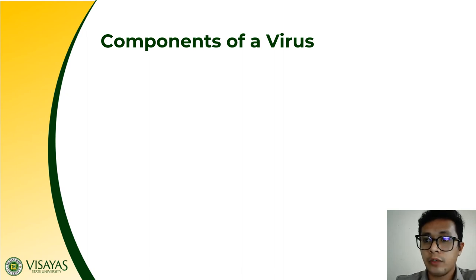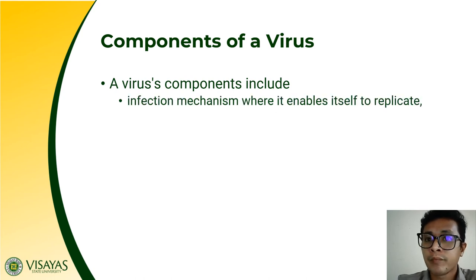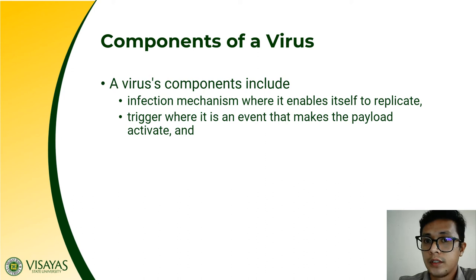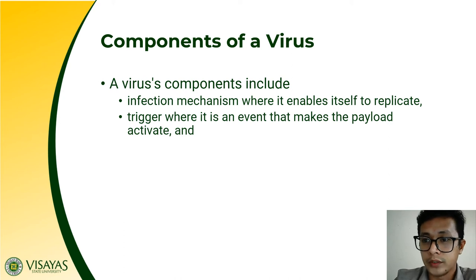What are the components of a computer virus? Normally, these are the different components. It has an infection mechanism, wherein the infection mechanism enables it to replicate — because the only way for a computer virus to infect is to replicate itself. There is also the trigger, which is the code or instruction on what a computer virus should do — it is an event that makes the payload activate. The payload is the actual code or instruction on what this virus should do. The trigger is just an event to activate your payload.